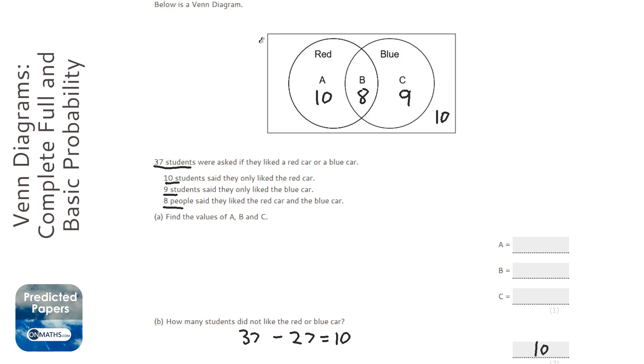And we can actually show that on a Venn Diagram on the outside like that. So filling in my answers: 10, 8 and 9.